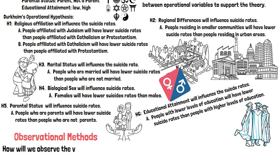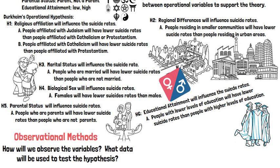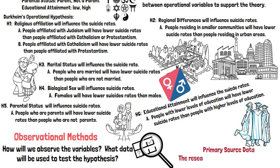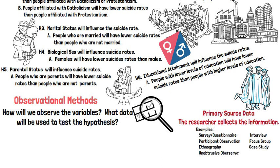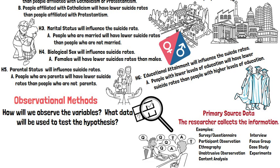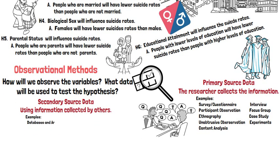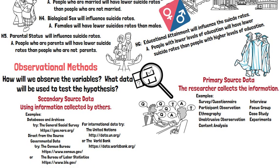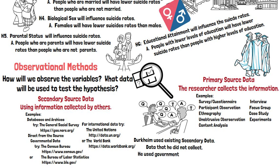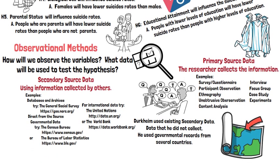Next, a researcher must decide how they will observe the variables and what data will be used to test the hypothesis. In the social sciences, we talk about primary source data, where the researcher collects the information — examples include surveys, participant observation, interviews, experiments, and content analysis. Or they can use secondary source data, which is information collected by others, including databases, archives, and governmental or international data. Durkheim used existing secondary data that he did not collect himself — he used government records from several countries.